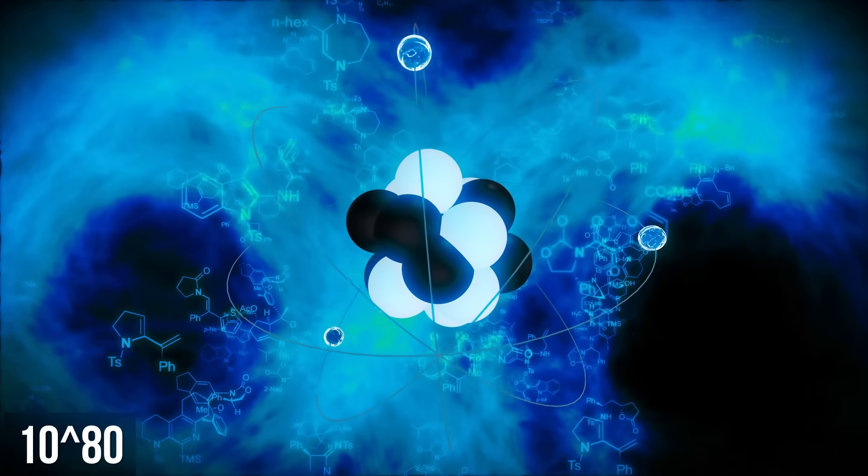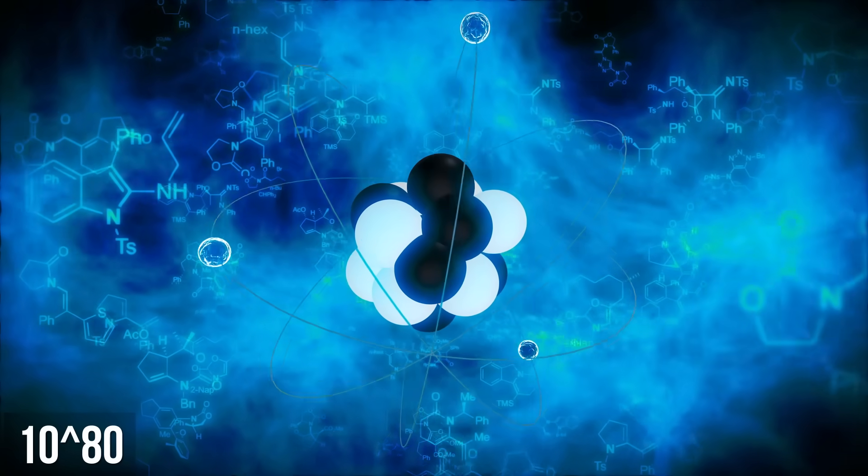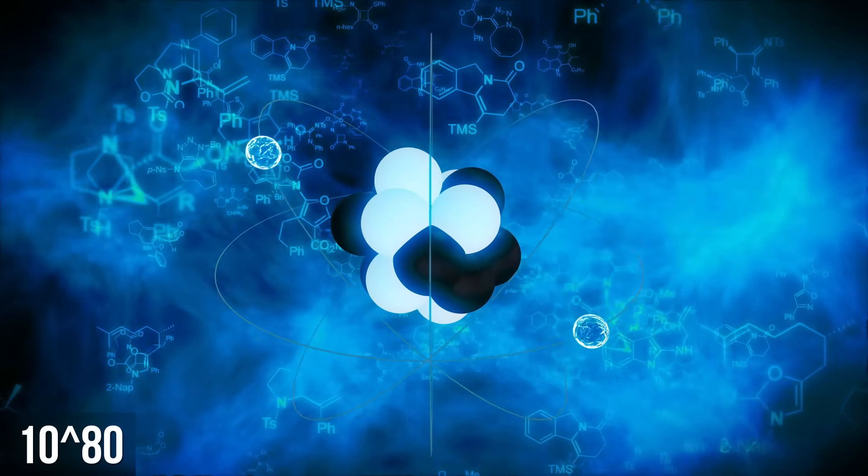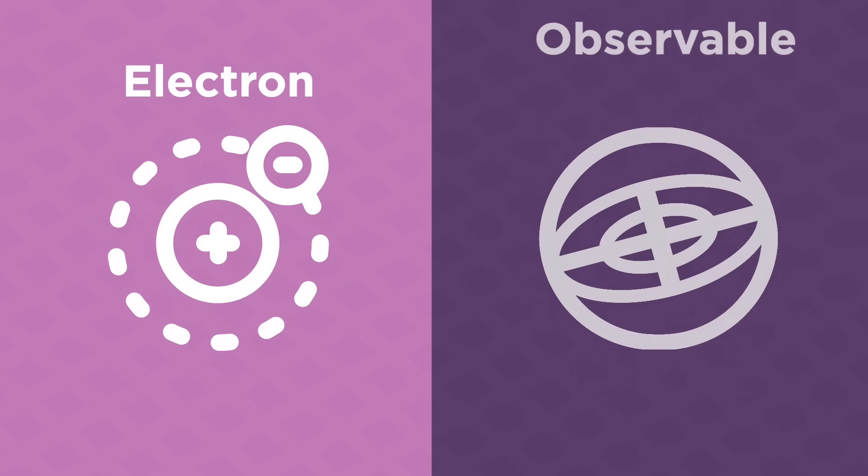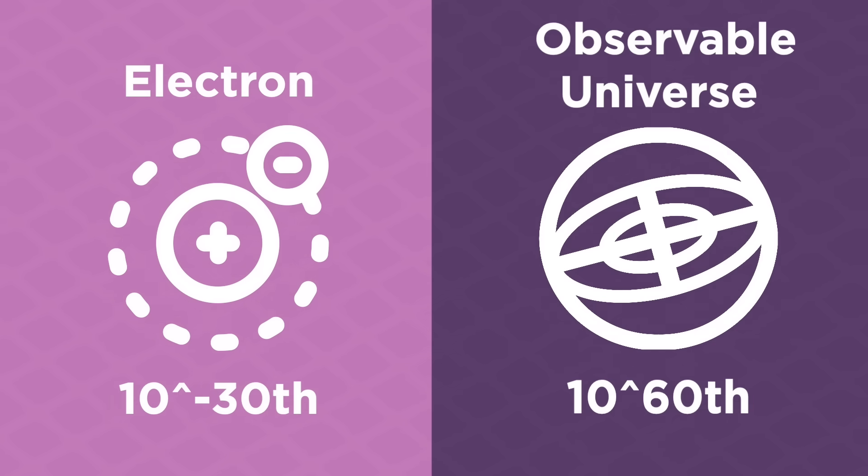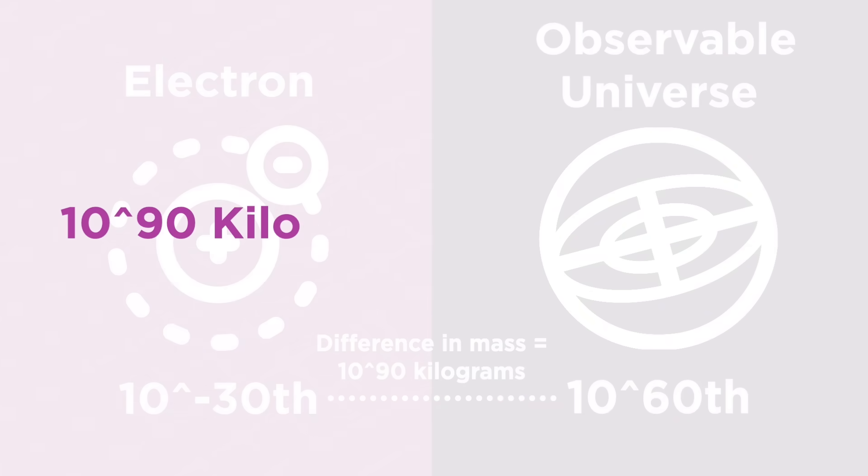But that is already roughly equal to the number of every single individual atom that exists in the entire observable universe. To put it all into even more perspective, consider for a moment the difference in mass between a single simple electron and the entire observable universe with around 2 trillion galaxies. The mass of the electron is 10 to the negative 30th power kilograms, while the mass of the observable universe is 10 to the 60th power kilograms. The difference in mass between the two is only 10 to the 90th power, which is only the same as 0.0000000001% of a Google.